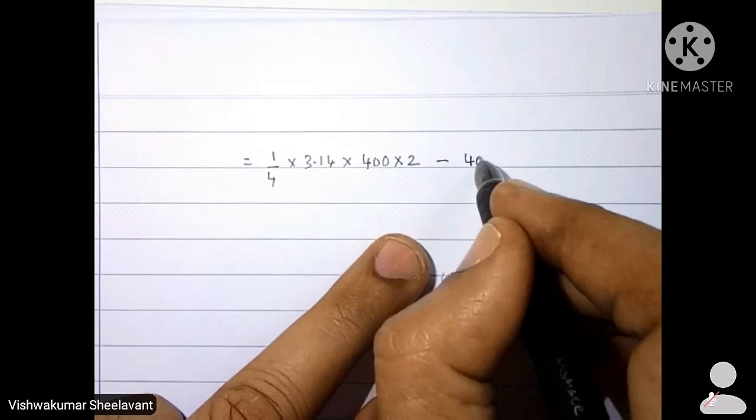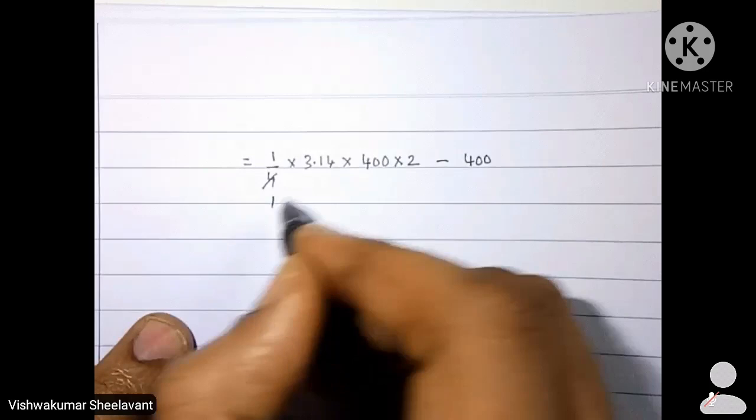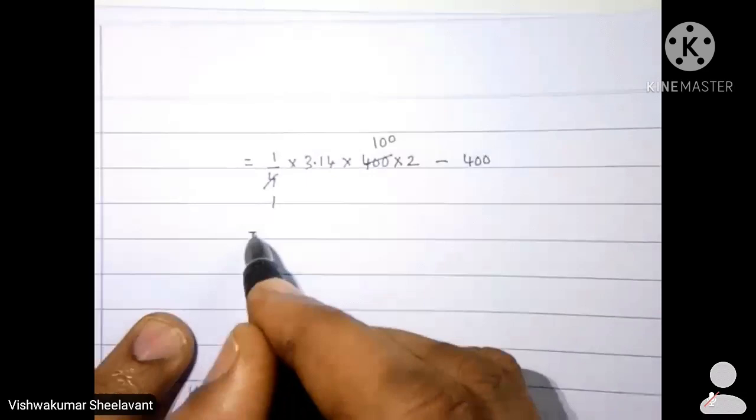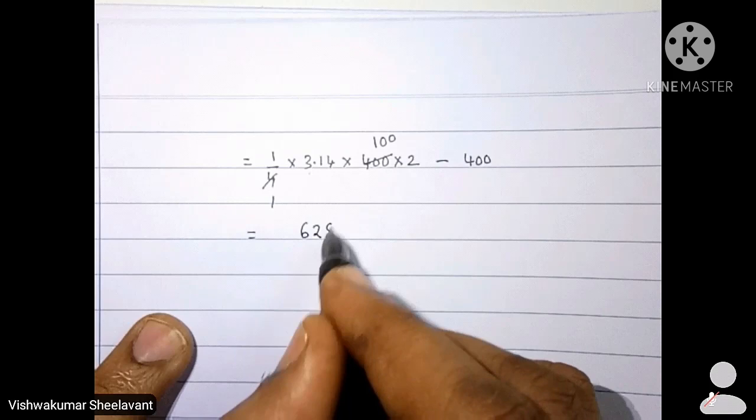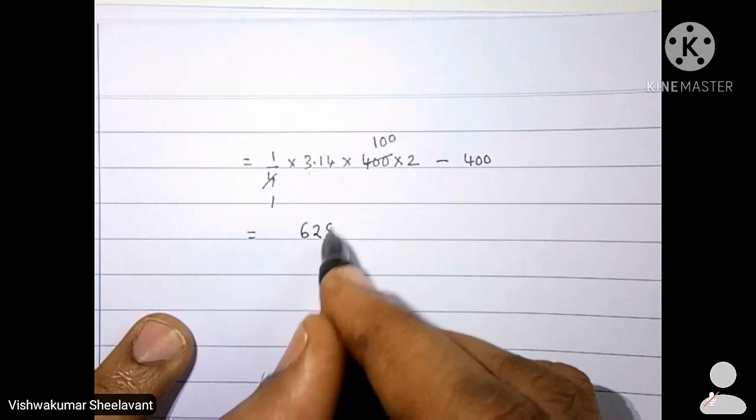That is 400. 3.14 into 100 will become 314 into 2 will become 628 minus 400, that is equal to 228 cm square.